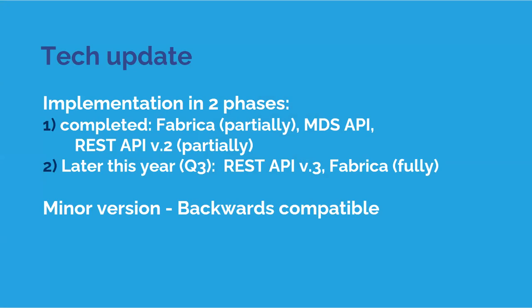A short tech update to start with. To support the new Metadata Schema, DataCite is updating its services to enable users to create and update DOIs with the new Metadata Schema. The changes to support Metadata Schema 4.4 are carried out in two phases to enable immediate access to non-breaking changes. Phase 1, released at the end of March, includes support for Metadata Schema 4.4 that does not require breaking or complicated changes to the REST API version 2.